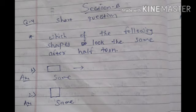Which of the following shapes look the same after half turn? If we set half turn, which of the following shapes look the same?